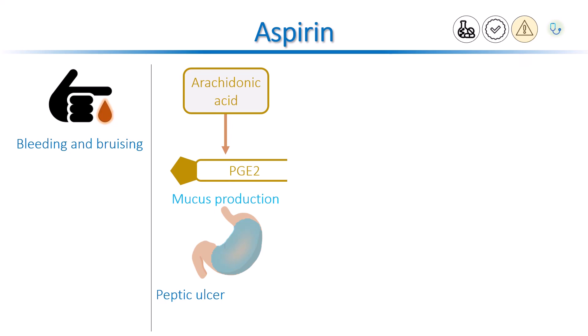This pathway depends on COX-1 enzyme. When we give aspirin, it inhibits COX-1 enzyme, decreasing the production of PGE2, and thus decreasing mucus production. This results in less protection against gastric acid, increases the risk of peptic ulcers, and if severe enough, it can lead to bleeding from existing peptic ulcers.